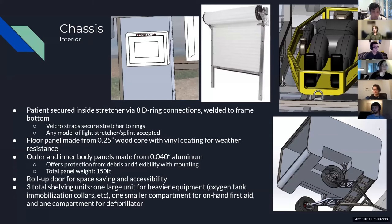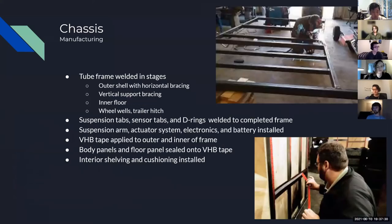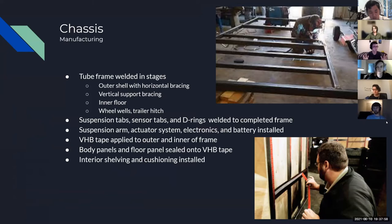The floor panel is made from a wood core with vinyl coating for weather resistance. The outer and inner panels are made from aluminum for debris protection, weather protection, and mounting flexibility. We also have a roll-up door for ease of access without taking up too much space, and three shelving units: a large one for equipment such as oxygen tanks, a small one for on-hand first aid for the EMT, and a defibrillator case. The frame will be welded in stages, then suspension tabs welded on, external electronics attached, VHB tape used for body panels, and finally interior shelving and cushioning installed.